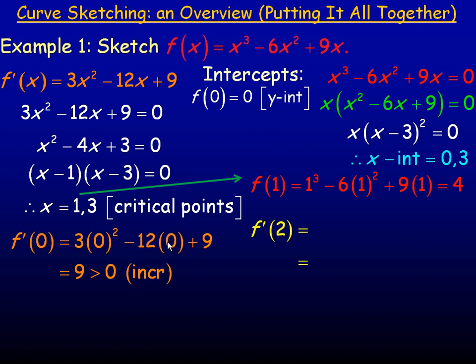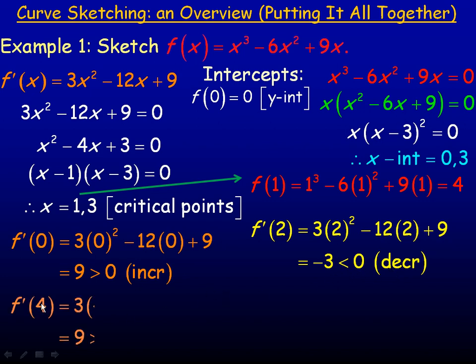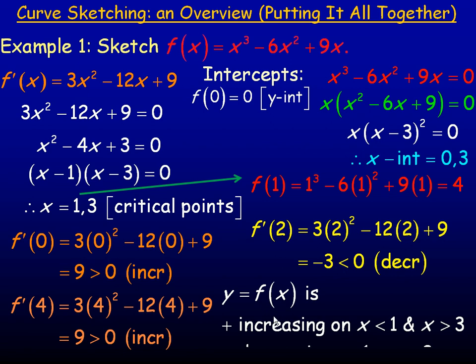Now we'll check between 1 and 3. I'll use 2 in the derivative. And that works out to be negative 3. So it's gone from increasing to decreasing. The first derivative is a negative value, so it's decreasing between 1 and 3. And then we'll check to the right of 3. I'll use 4. f'(4) is back to a positive number. It's 9. And so it's gone back to increasing again. So our function is increasing to the left of 1 and where x is greater than 3, and it's decreasing between 1 and 3.